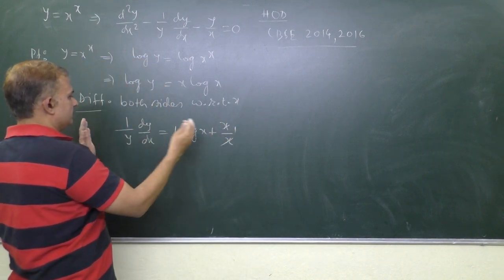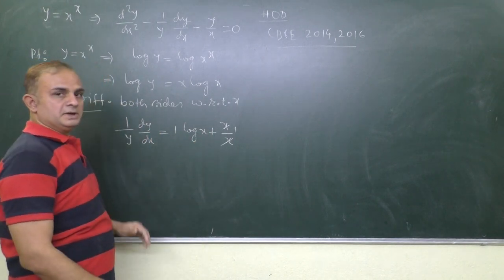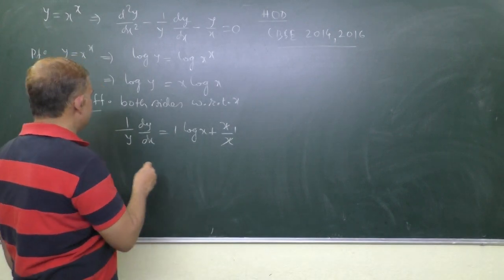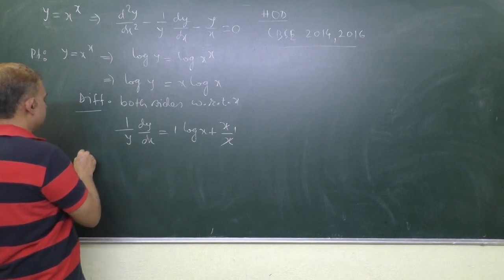Now we have 1 by y dy by dx is equal to log x plus 1. If you transfer this y on right side then it becomes quite difficult. Otherwise if you differentiate it right now then it would be very easy to find this answer.